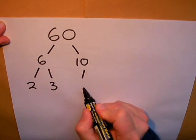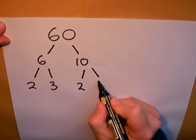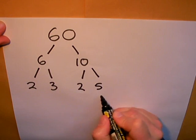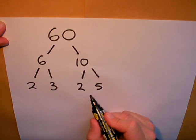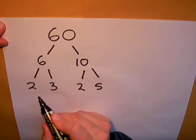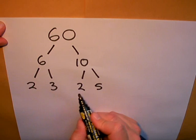10 can be divided up by 2 and 5. And again, these are prime numbers. So I've got to the end of the branches of the tree, if you like. These are my prime numbers.